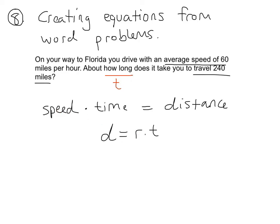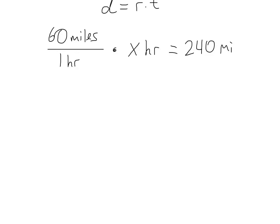So what's our speed in this case? Well, it's 60 miles per hour. So I'm going to write 60 miles over one hour, because remember, a fraction is a ratio, 60 miles per hour. And we're going to multiply that by, well, the time. How long? Well, how long does it take you to travel 240 miles? Well, we don't know. So it's just going to be X amount of hours. And that's equal to a distance. Well, what's our distance we're going? We're going to travel 240 miles. So how do we go about solving this?